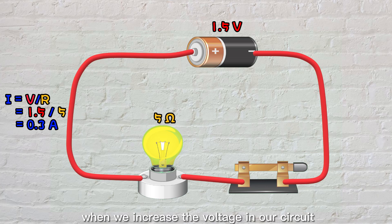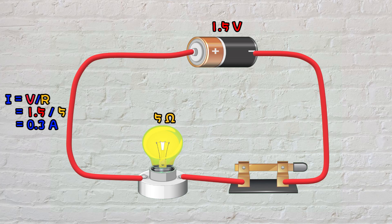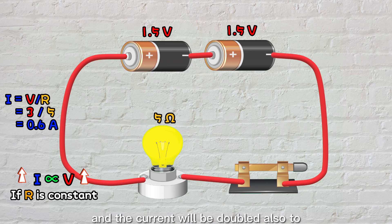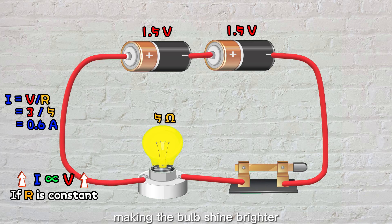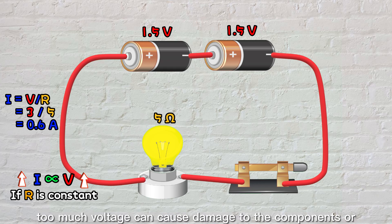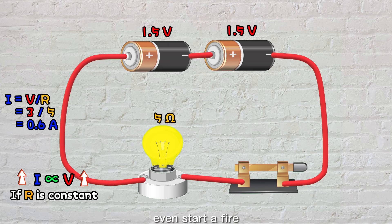Now, let's see what happens when we increase the voltage in our circuit. By adding another battery, the voltage of the circuit is doubled to 3 volts. And the current will be doubled also to 0.6 amps based on Ohm's law, making the bulb shine brighter. But we need to be careful when increasing the voltage in a circuit. Too much voltage can cause damage to the components or even start a fire.